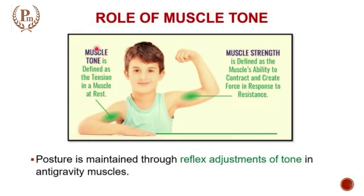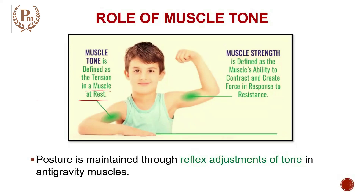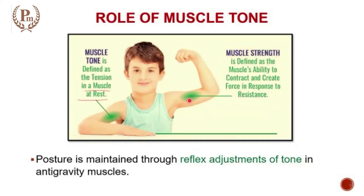If I want to ask you for a one-liner definition of muscle tone, your answer should be that it is defined as the tension in the muscle even when the muscle is at rest. Tone is not defined when you are contracting — tone is defined when the muscle is at rest. So when you passively move any hand, suppose you want to flex a person's arm, you will feel that there is a tone, a resistance offered by the flexors of that limb.